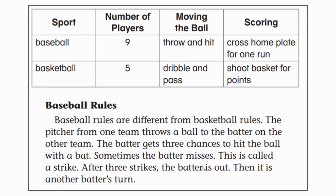This would not allow other players a chance to get the ball. And here I see a chart — a text feature — giving us more information. What do you see in this chart, second graders? I see they are comparing baseball to basketball with the number of players for each sport, the way to move the ball in each sport, and ways that you can score in baseball and basketball. Let's continue reading.